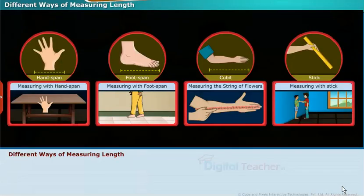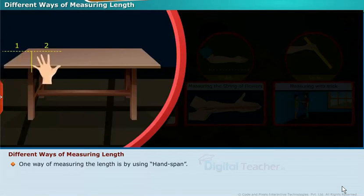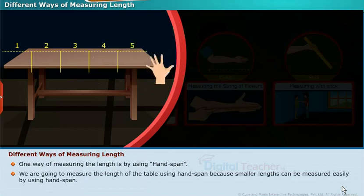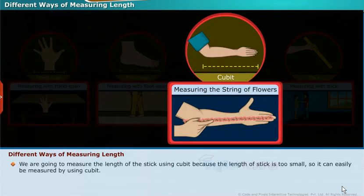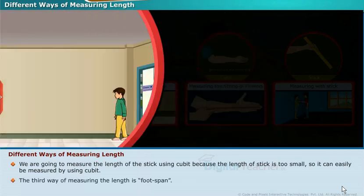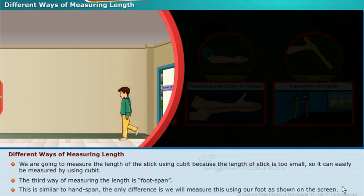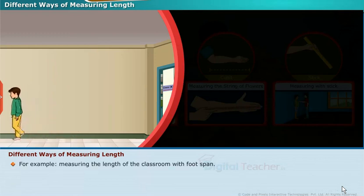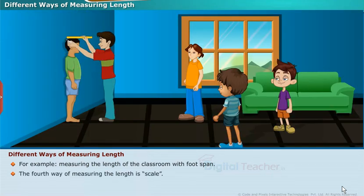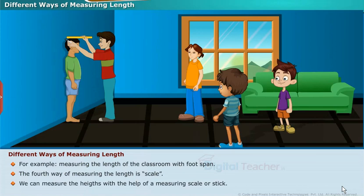Let us see the different ways of measuring length. First, using hand span: we measure the length of a table using hand span, because smaller lengths can be measured easily this way. Second, using cubit: we measure the length of a stick using cubit, as it is small enough. Third, using foot span: similar to hand span but measured using our foot — for example, measuring the length of a classroom. Fourth, using a scale or measuring stick to measure height.